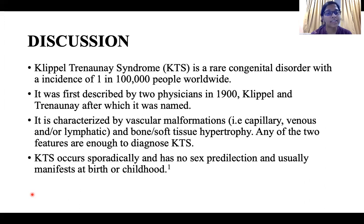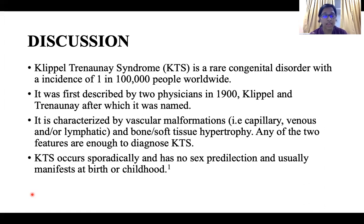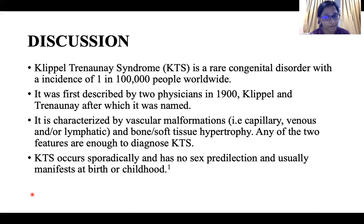It is characterized by vascular malformations — capillary, venous, or lymphatic — and bone or soft tissue hypertrophy. Any two of these features are enough to diagnose Klippel-Trénaunay syndrome. It occurs sporadically, has no sex predilection, and usually manifests at birth or in childhood.